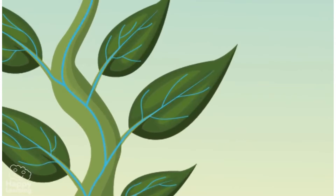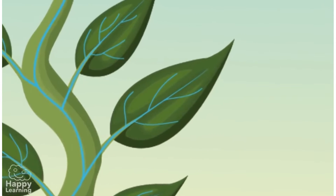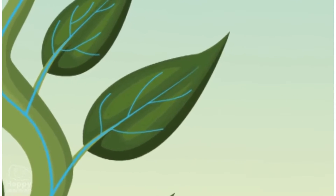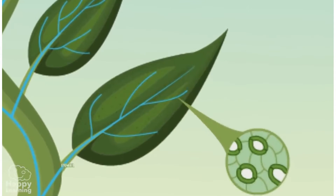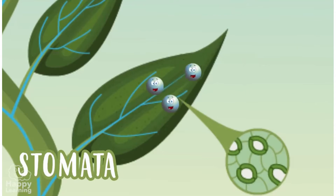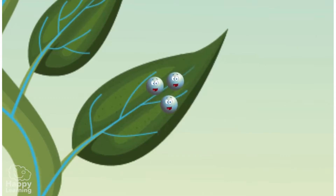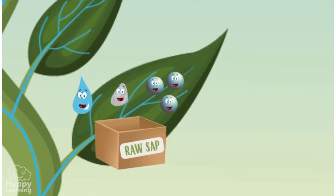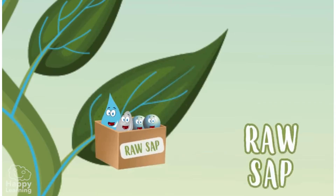The leaves are full of tiny pores called stomata, which absorb carbon dioxide that the surrounding air contains. All this — water, minerals, and carbon dioxide — is called raw sap.